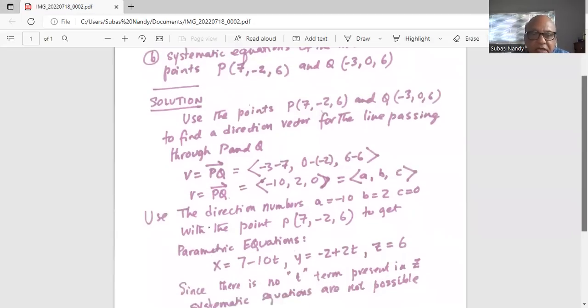So the parametric equations: x is equal to x1 plus A t. x1 is 7, A is minus 10, so 7 minus 10 t.